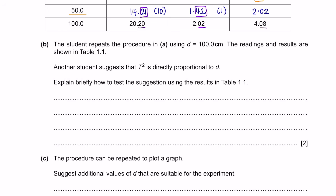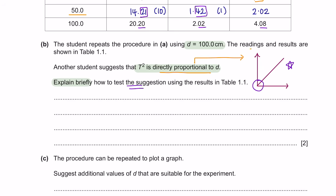Question B. The student repeats the procedure in part A using d equals 100 centimeters. The readings and results are shown in table 1.1. Another student suggests that T squared is directly proportional to d. To test the suggestion, we can plot a graph of T squared against d to see if we get a straight line passing through the origin.